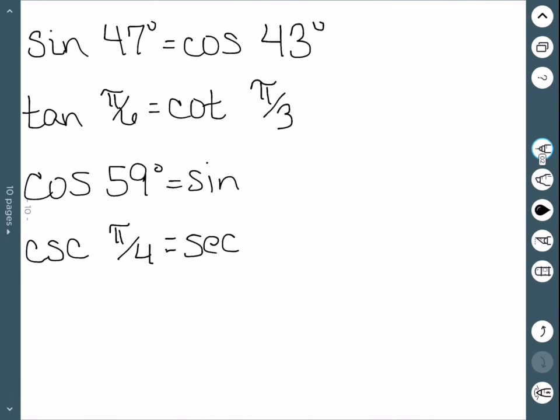To go from cosine to sine, 90 minus 59 is 31 degrees. And then cosecant of pi over 4. Once again, this time we want to do pi over 2 minus pi over 4, and we would get pi over 4.